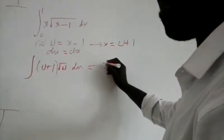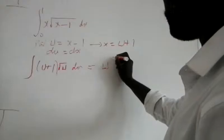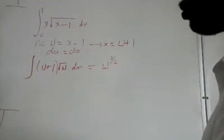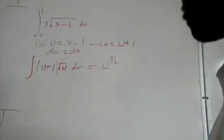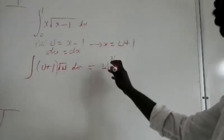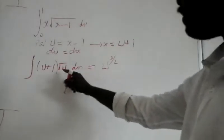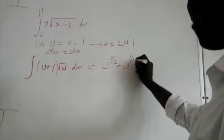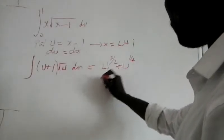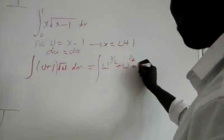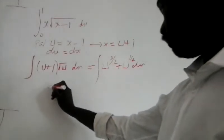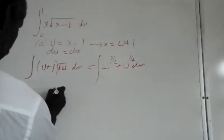So that's equal to, if we simplify here, root u times u would be u to the 3 over 2. That is u to the 1 times u to the half. You add exponents, u to the 3 over 2, plus root u, which is u to the half, du.